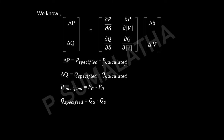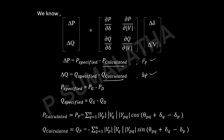P_calculated and Q_calculated come from the static load flow equations. The number of ΔP values equals the number of PQ buses plus the number of PV buses. The number of ΔQ values depends only on the number of PQ buses. In this problem, bus 2 is a PQ bus and bus 3 is a PV bus. So we have ΔP2, ΔP3 (for both PQ and PV), and ΔQ2 (for PQ only).